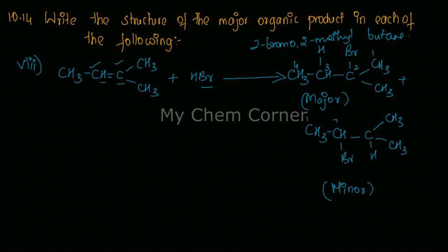All right, now for the minor product, if I'm trying to name them, this is going to be the numbering, so here it will be 2-bromo-3-methylbutane.